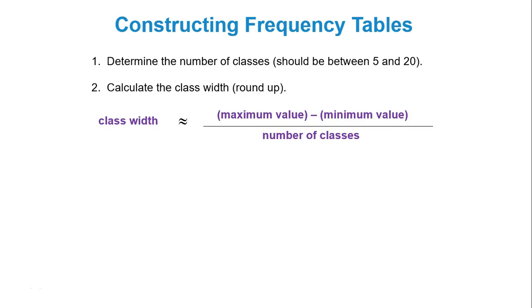Your second step will be to calculate the class width. You will always want to be sure you round up your class width. The formula for class width is maximum value minus minimum value divided by how many classes you want to have or how many classes they want you to have.